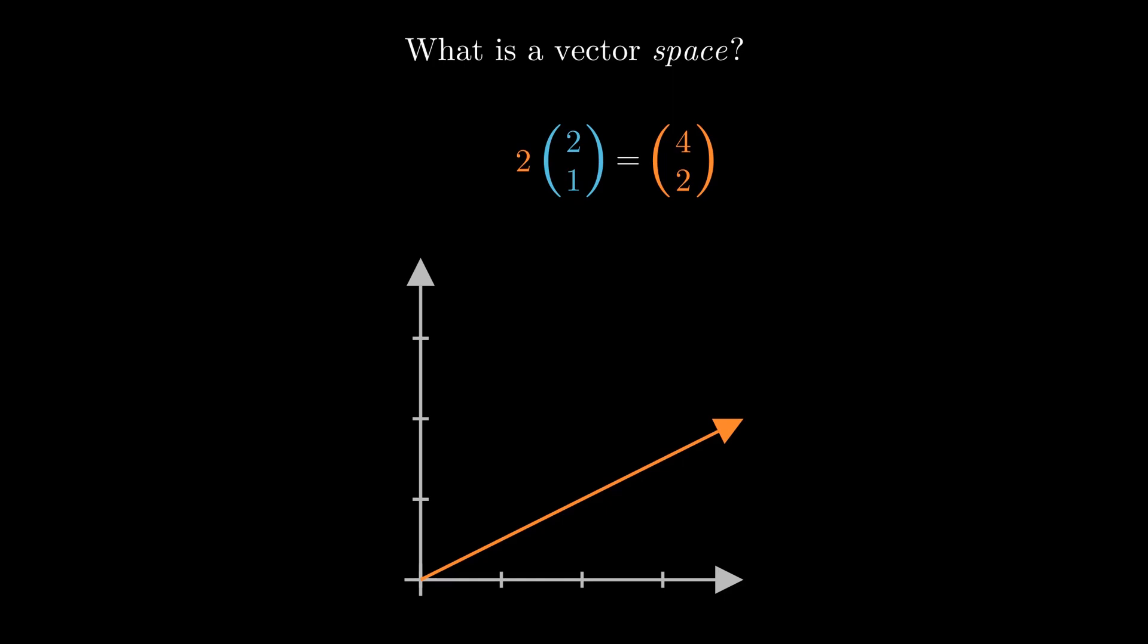Okay, numerically, it's just multiplying each component. So 2 times 2 is 4. 2 times 1 is 2. And again, if you're scaling by a negative, it might flip the direction. But it really still can be thought of as the same direction, you're just walking backwards. Okay, we can think a bit like that in math sometimes.